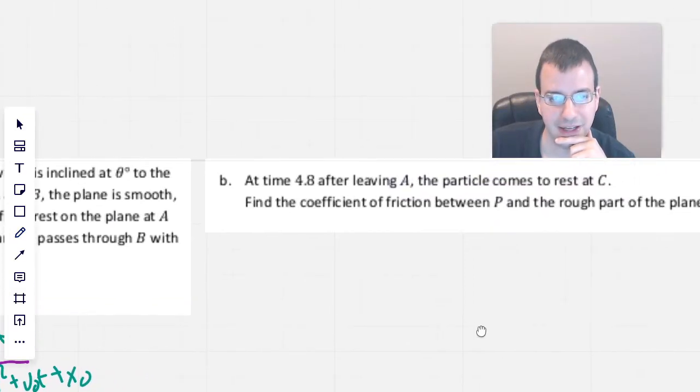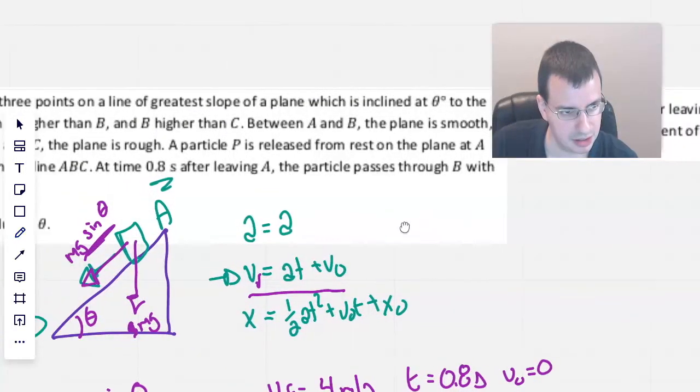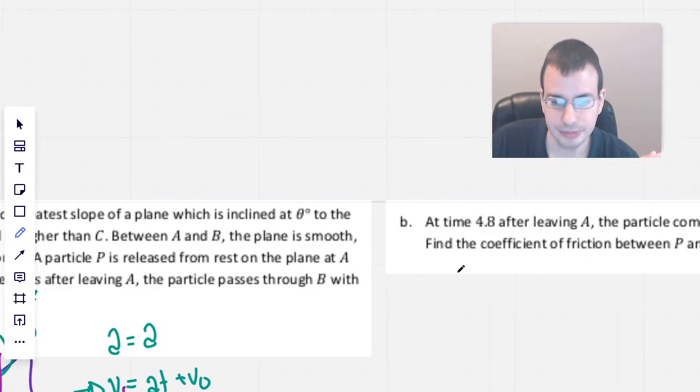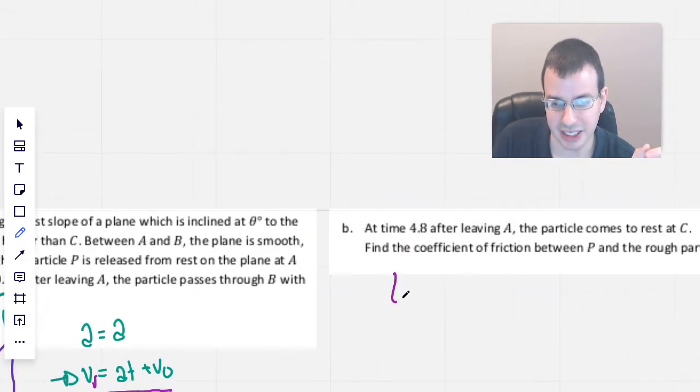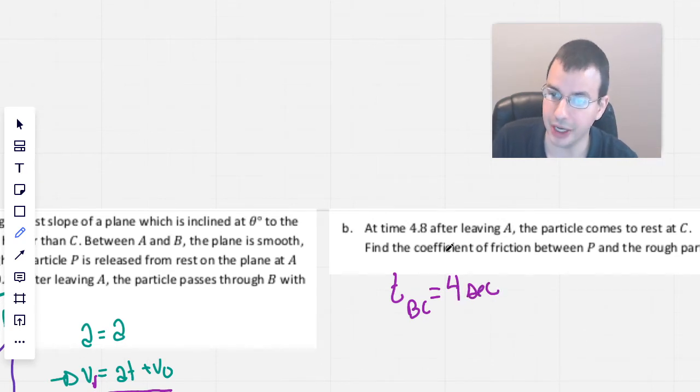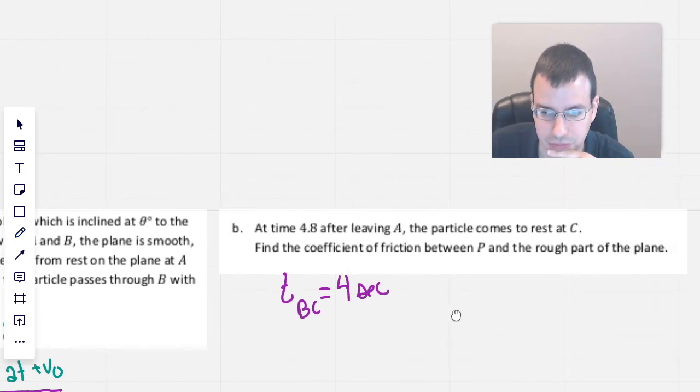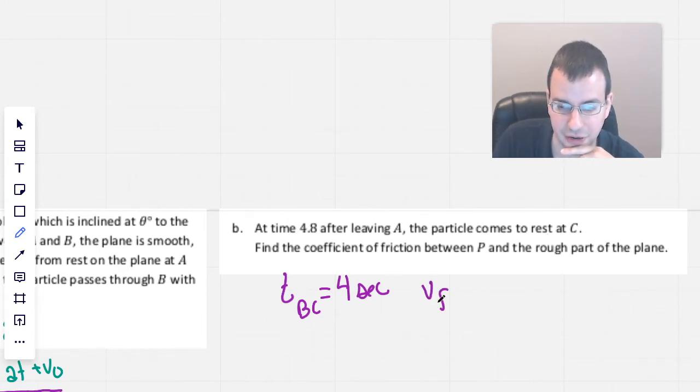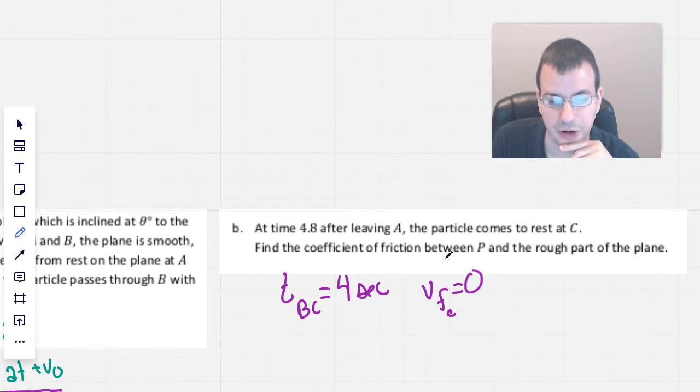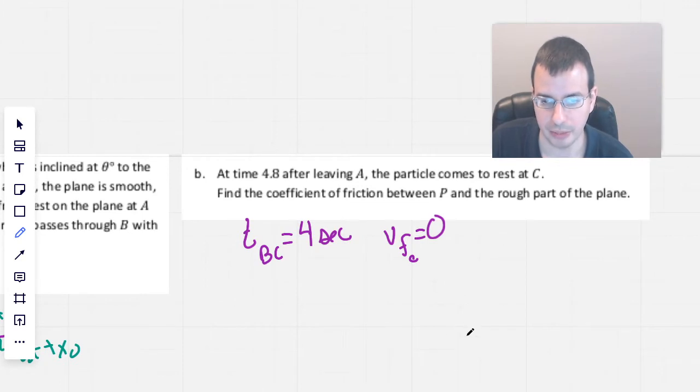Now, second part of the question. At time t equals 4.8 seconds after leaving A, so it took 0.8 seconds to get from A to B. So what this is saying is that time B to C equals 4 seconds. Basically 4.8 minus 0.8. It comes to rest at C. So final velocity at C will be 0. Find the coefficient of friction between P and the rough part of the plane.